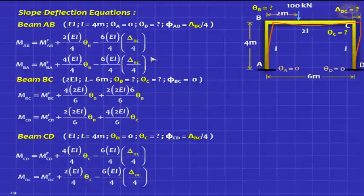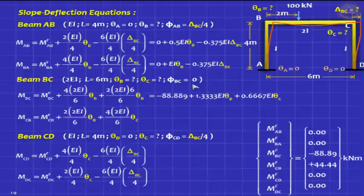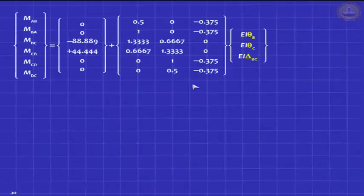I am sure you would have got this correct. Please note that the sway degree of freedom will affect only the vertical elements AB and CD. They are both clockwise chord rotations. The chord rotation is delta BC divided by the height 4. These are easy to write down. You already know your fixed-end moments, so you can plug in those values and simplify. These are your slope deflection equations.